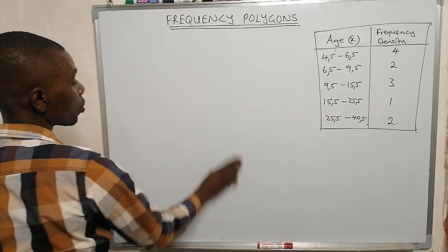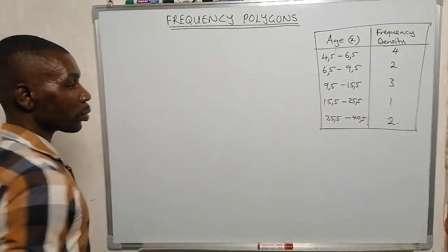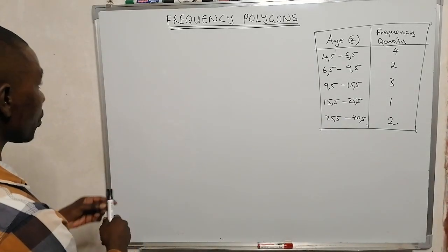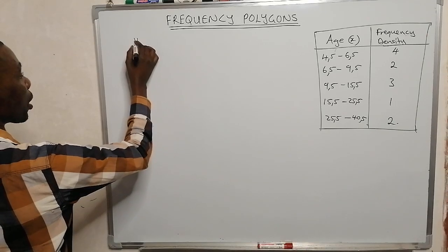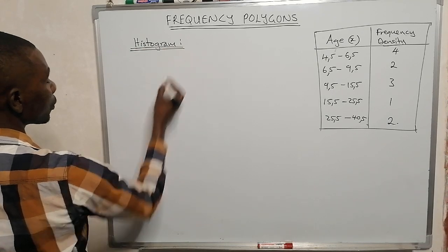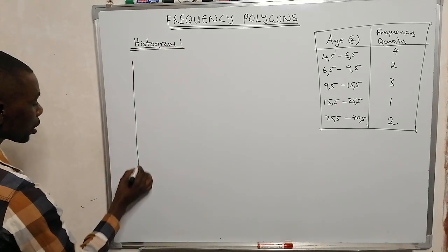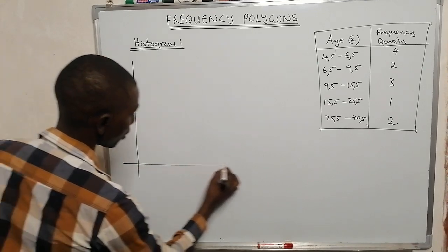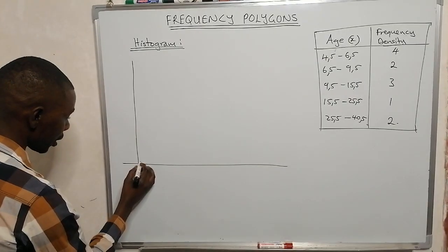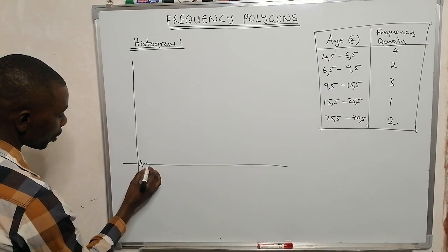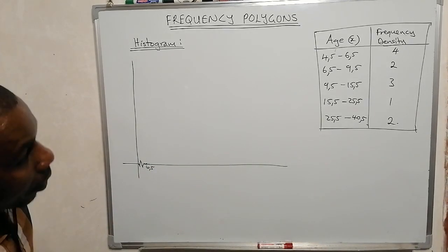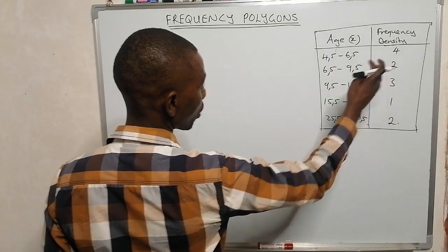Remember, the question wants us to construct a frequency polygon, but we cannot construct a frequency polygon from grouped data without a histogram first. For our histogram, we are starting from 4.5, not from 0, so we note that on the axis.